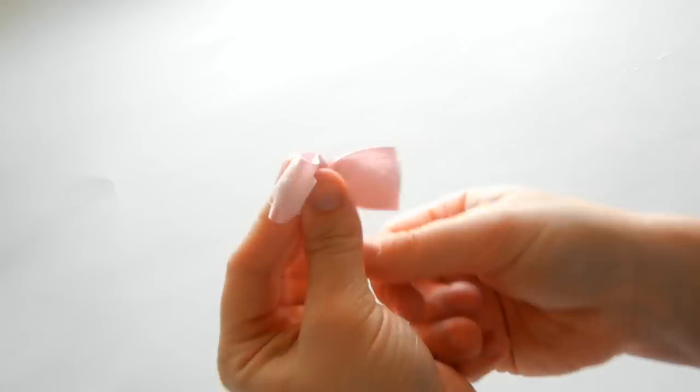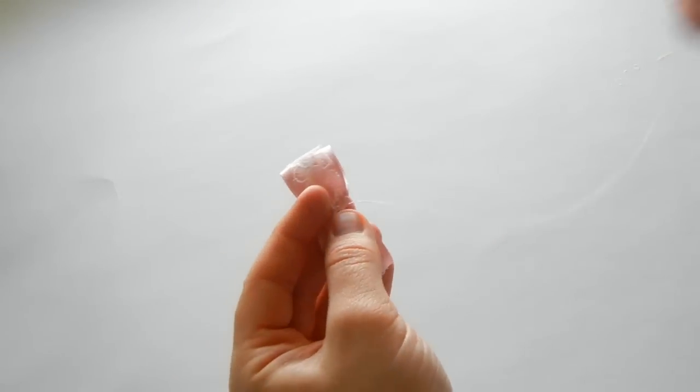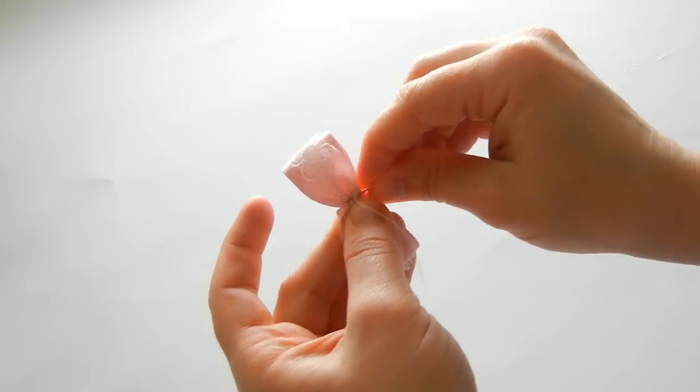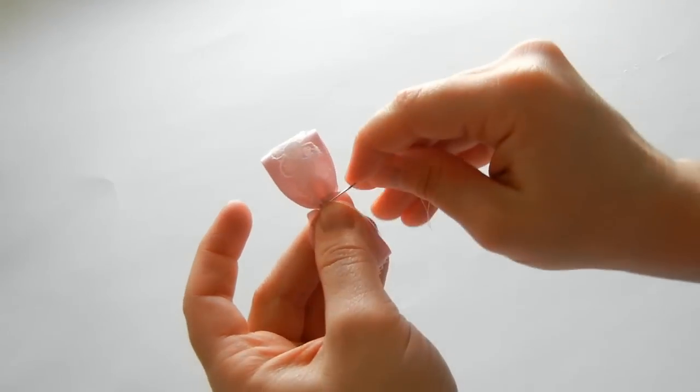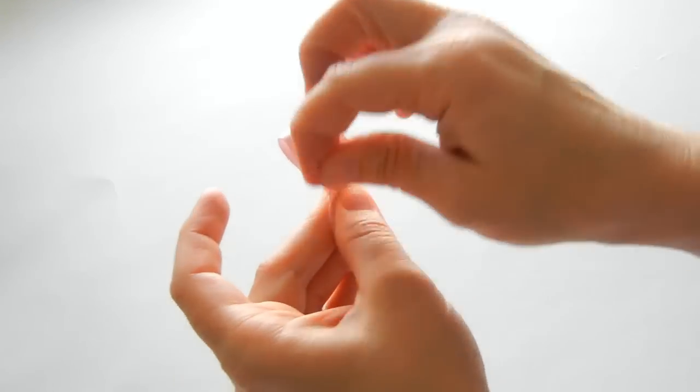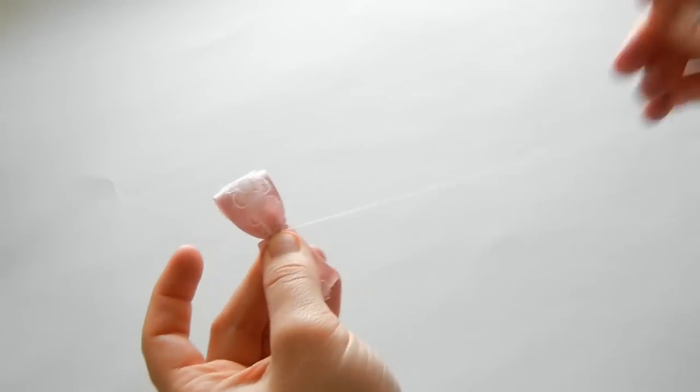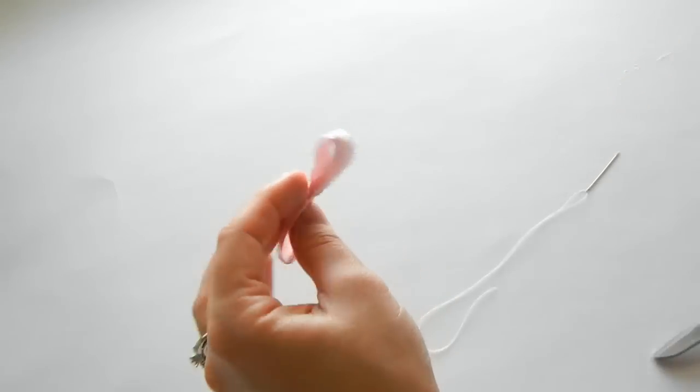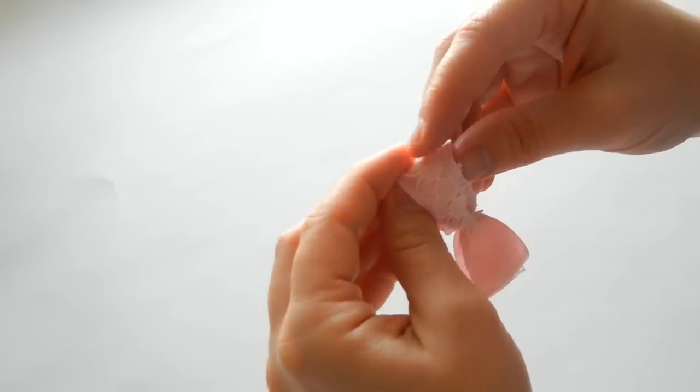Wrap it around a few times, tightening as you go. Take your needle to the back and stick it through. Do a knot by pulling it through, then pull this through the loop. Cut off your excess, and that gives us our little bow.